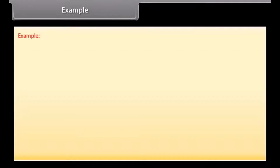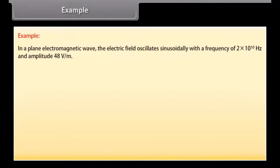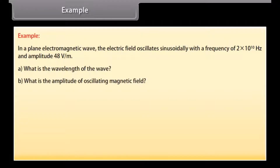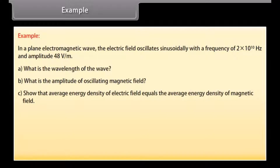In a plane electromagnetic wave, the electric field oscillates sinusoidally with a frequency of 2 × 10^10 Hz and amplitude 48 volts per meter. What is the wavelength of the wave? What is the amplitude of the oscillating magnetic field? Show that the average energy density of the electric field equals the average energy density of the magnetic field.